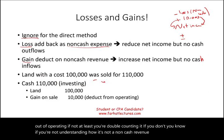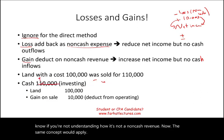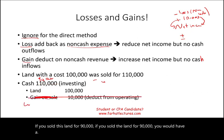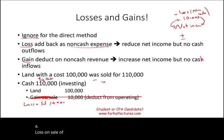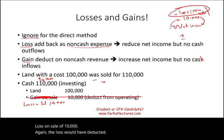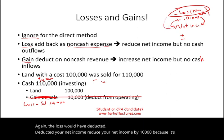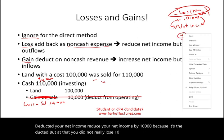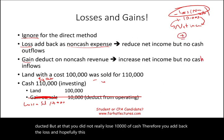The same concept applies if you sold the land for $90,000 — you would have a loss on sale of $10,000. The loss would have reduced your net income by $10,000 because it was deducted. But you did not really lose $10,000 of cash, so you add back the loss.